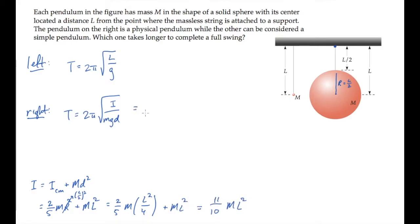We can substitute this result into the expression above, and simplify by canceling terms in the numerator and denominator, seeing that the period of the physical pendulum on the right is 2 pi square root 11 tenths l over g. And this means that its period is about 5% larger than the period of the simple pendulum on the left.